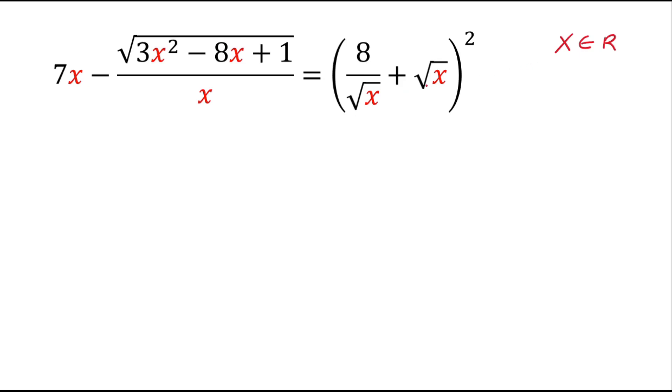Look carefully at the left and right hand sides. In the denominator part we have a square root of x. So we can say x is greater than 0.